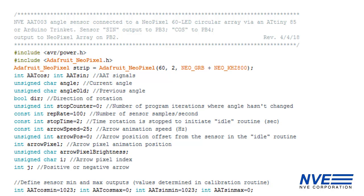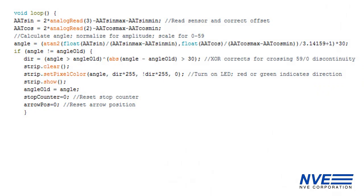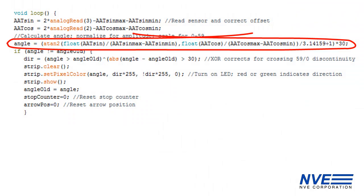This section is parameters and setup. The calibration routine. The main program where we read the two sensor outputs and calculate the angle using a two-variable arctangent.